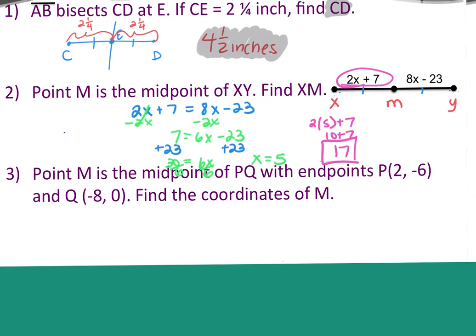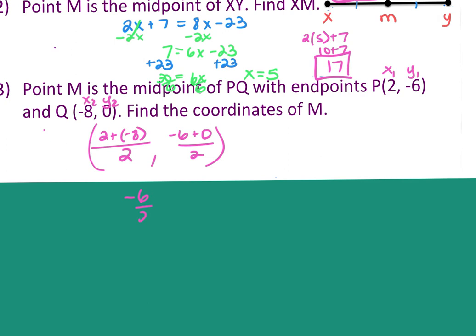Number 3 says point M is the midpoint of PQ with endpoints P(2, -6) and Q(-8, 0). Find the coordinates of M. So my midpoint, x1. So it doesn't matter which ones you call the 1s or the 2s as long as you're consistent within the point. X1 would be 2 plus negative 8 is the x2 divided by 2. And then y1, negative 6, plus y2, which is 0, over 2. So I end up with negative 6 over 2, negative 6 over 2, which is negative 3, negative 3.